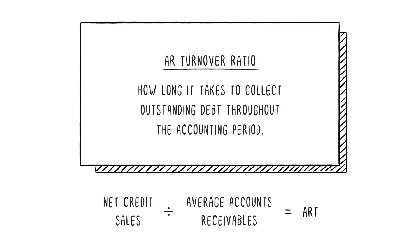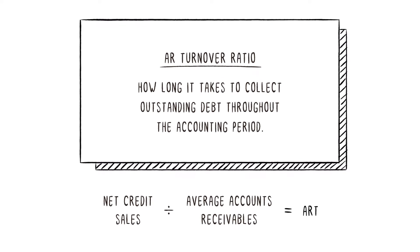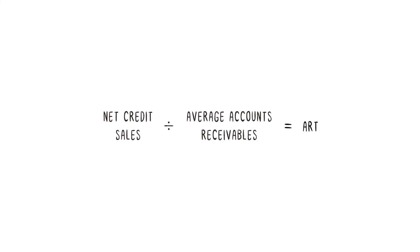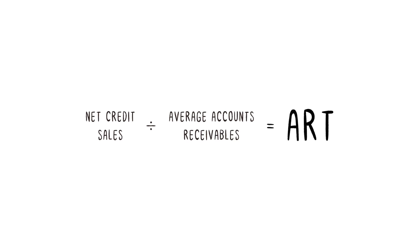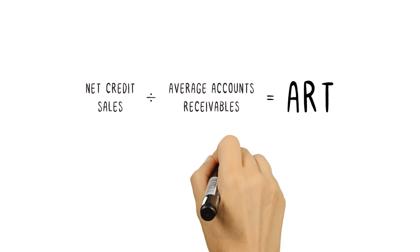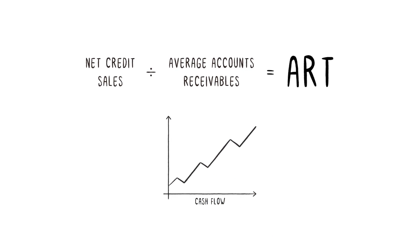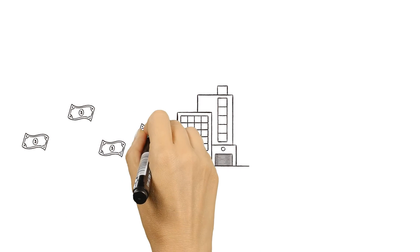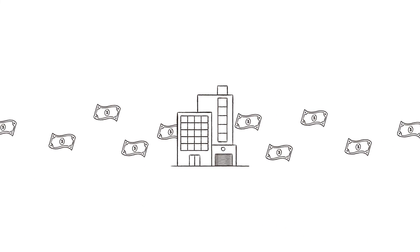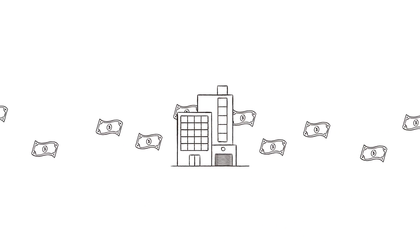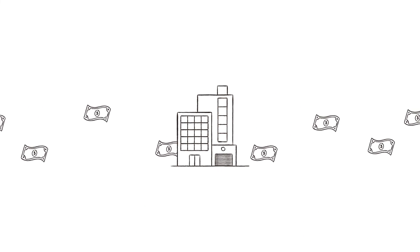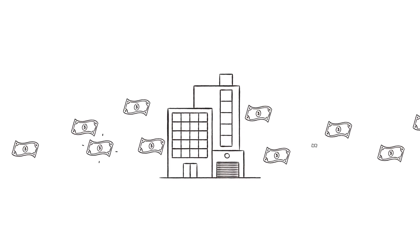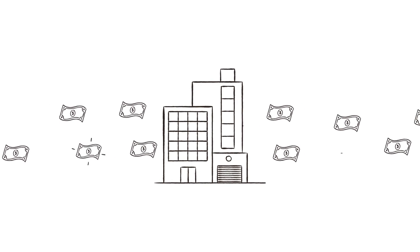Companies that are conservative about extending credit or are good at collections have high AR turnover ratios, which has a positive impact on cash flow. By continuously tracking accounts receivable through AR reports, companies can optimize cash flow for a healthier business.